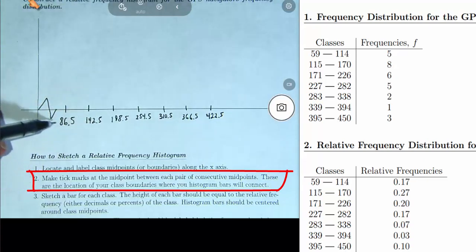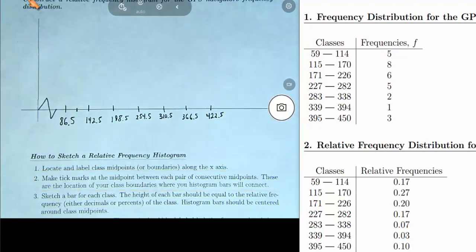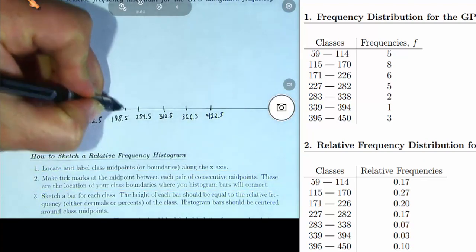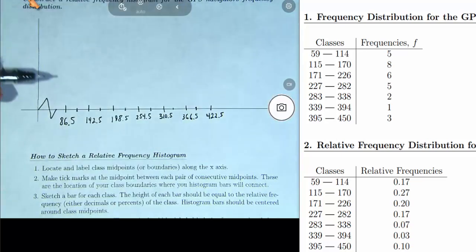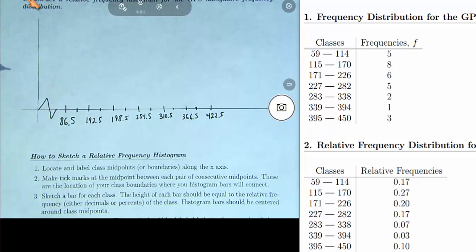So, here's two consecutive midpoints. I'm going to just put a smaller tick mark between them. This will be us locating the boundaries. The class boundaries are where the histogram bars will touch, or where they will connect.